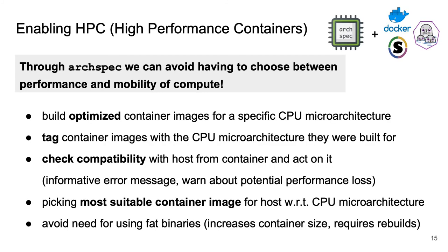Let's look at the opportunities that Archpec creates in the context of HPC and containers. In our view, it enables not having to choose between performance and mobility of compute — you can have both. When leveraging Archpec, you can build container images that are specific to a particular CPU microarchitecture and tag these images accordingly in an automated way. When running these container images, Archpec can be used to do a compatibility check — does the image actually work on a given host, taking into account the CPU microarchitecture? If not, we can produce a clear error message rather than letting the software crash with a puzzling illegal instruction error. If the container image is compatible with your host but maybe not fully using some of the capabilities of the CPU, you could print a warning message to inform you of that — TensorFlow has done something like this for their pre-built binaries. If multiple container images are available, each including the same software stack but built for a different CPU microarchitecture, Archpec enables you to pick the best suited one for your host, effectively avoiding the trade-off between performance and mobility of compute.